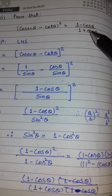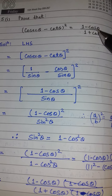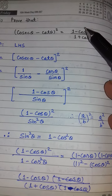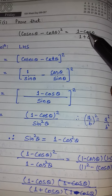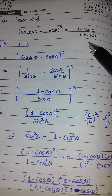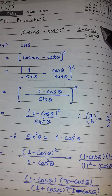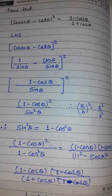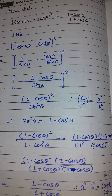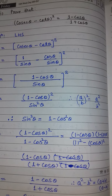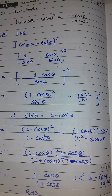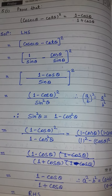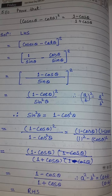The second method for Class 10 students: you can also start from the right hand side, taking 1 − cos θ upon 1 + cos θ, and show that the left hand side also comes. I hope Class 10 students understand the question. If you find it helpful, please share with your friends.